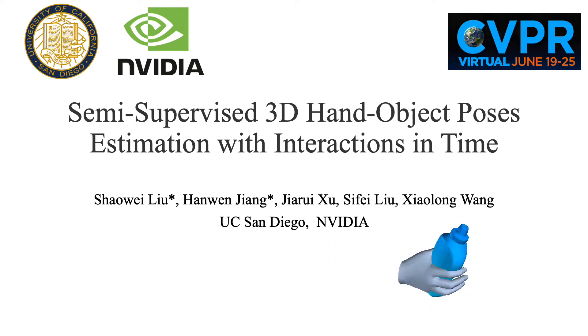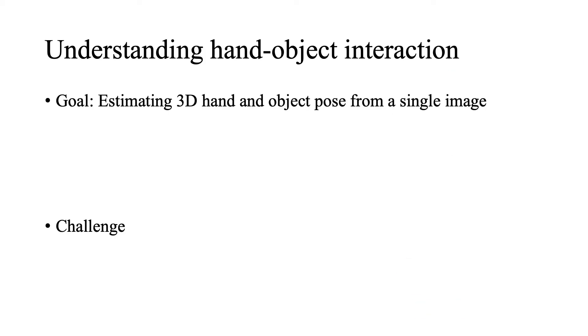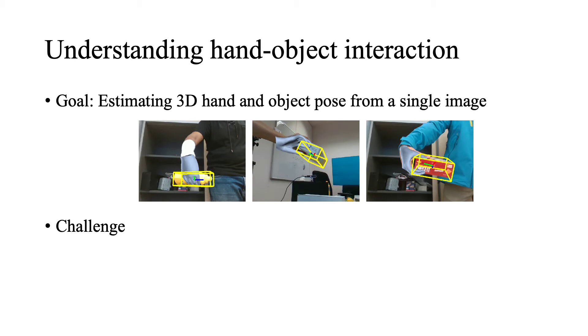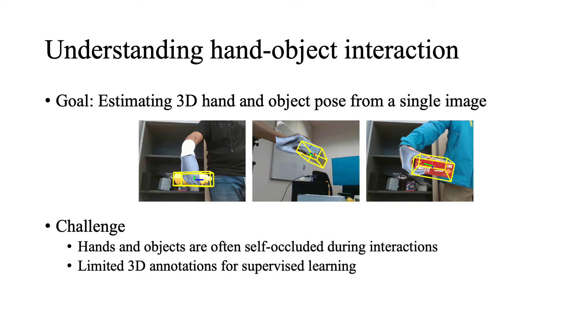This talk discusses the paper Semi-supervised 3D hand and object pose estimation with interactions in time. Estimating 3D hand and object pose from a single image is extremely challenging. Hands and objects are often self-occluded during interactions, and 3D annotations are scarce and difficult to obtain.